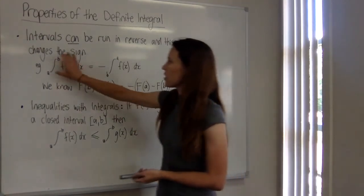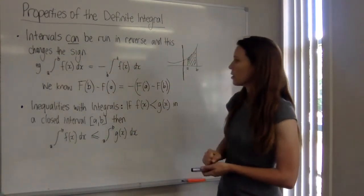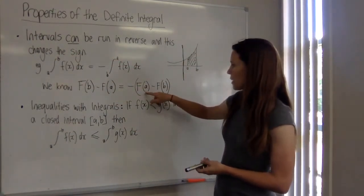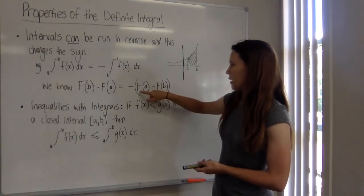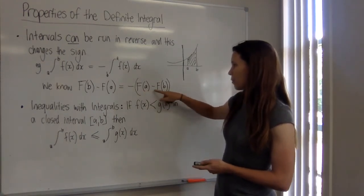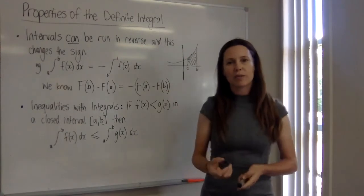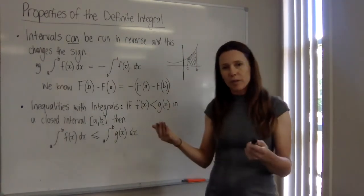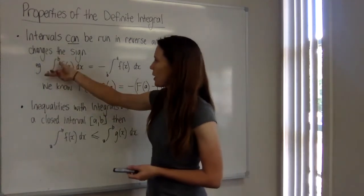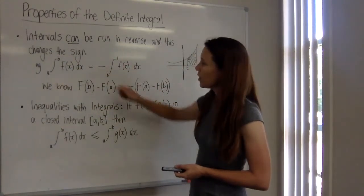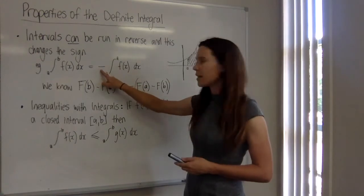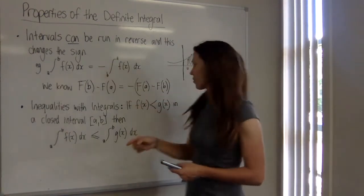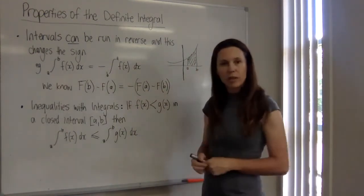But if we've switched these around and done them the other way around, what's that going to do? Well, it's going to mean that we're going to have big F of a minus big F of b. And we know that that will give us the exact same number in the end, but with the opposite sign. So if we switch the bounds, we can do that, but we need to just put a negative out the front.